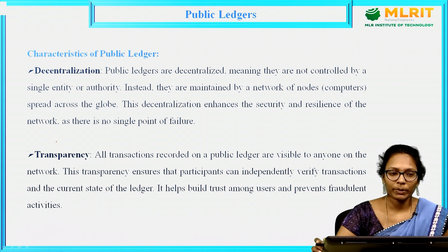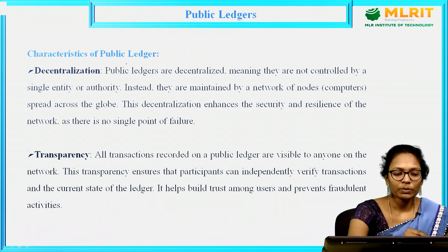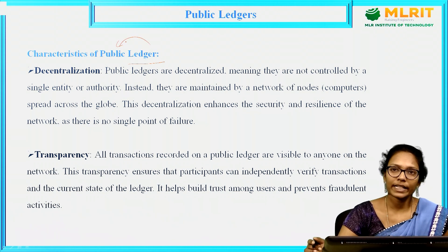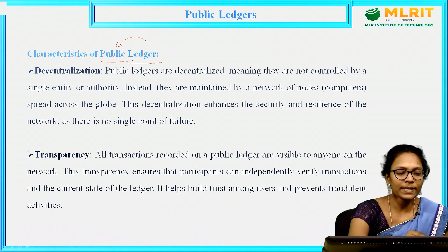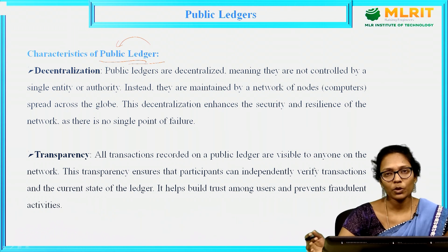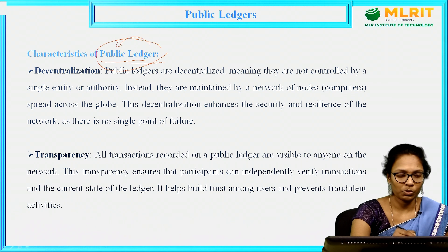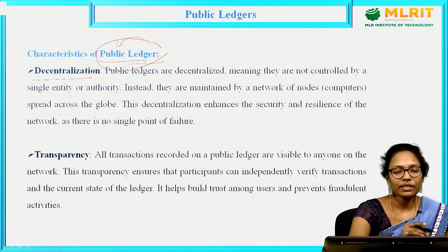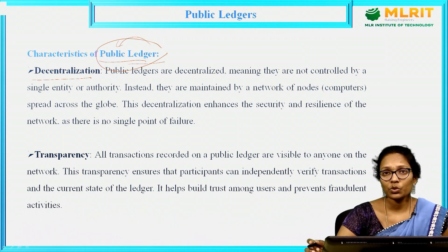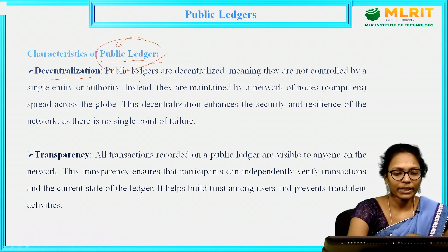What are the different characteristics of public ledger? A ledger is nothing but a set of transactions or records which are transparent, distributed and decentralized — that is what you call a public ledger. As it is following blockchain technology, blockchain characteristics will be applied to public ledger also. The first characteristic is decentralized — these are all decentralized, there is no central authority, and there is no person to control these transactions.